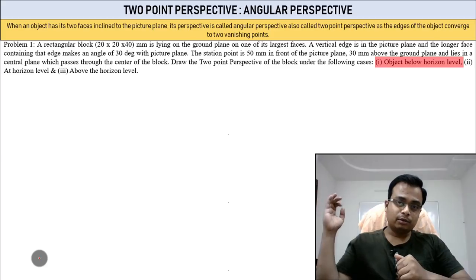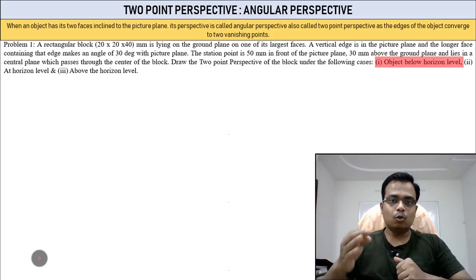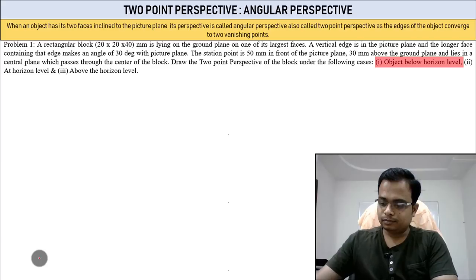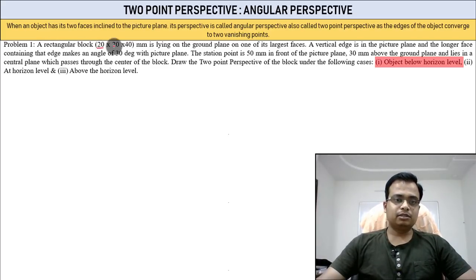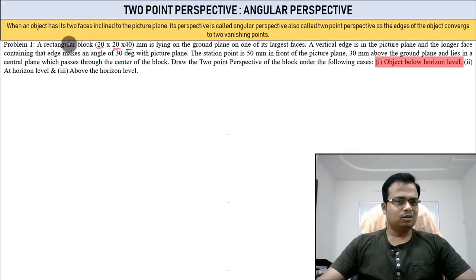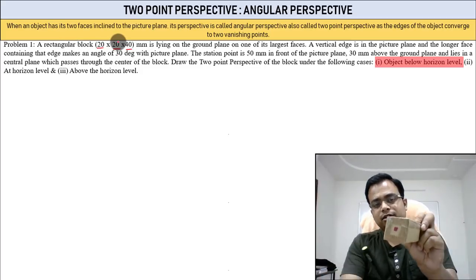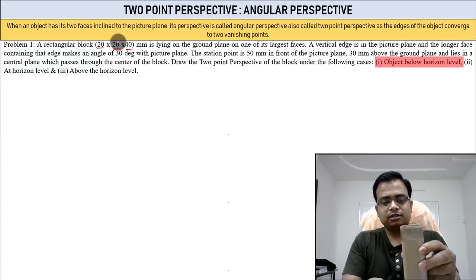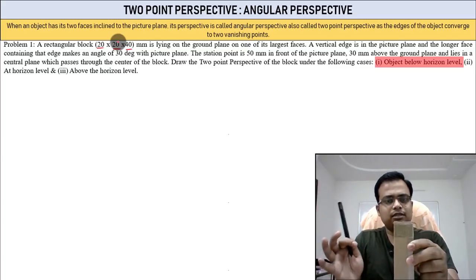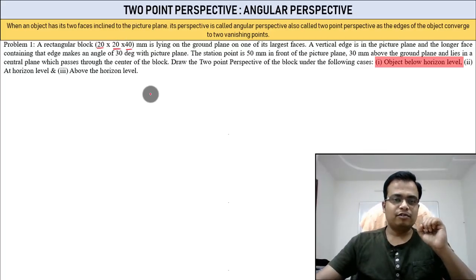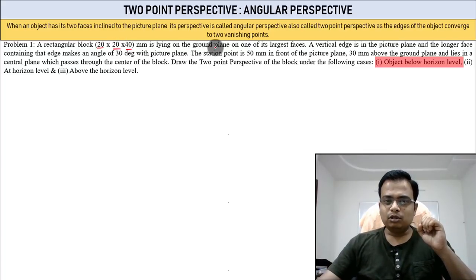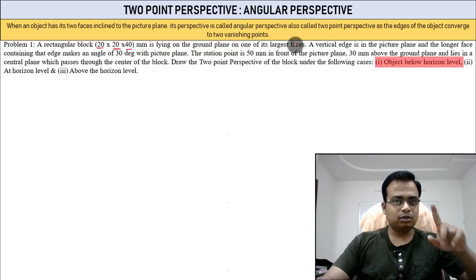Let's begin with problem number one. There is a rectangular block — it's a square prism, basically a cuboid — 20 by 20 by 40. So it's 20, 20, and the height is 40. It is lying on the ground plane on one of its largest faces.